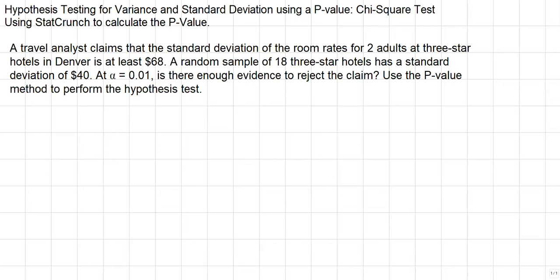We know that the claim is given right here. The claim is the standard deviation of the room rates for two adults at three-star hotels in Denver is at least $68. At least is going to be a greater than or equal to.